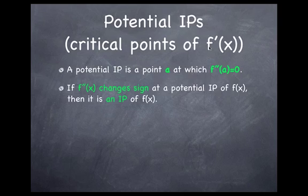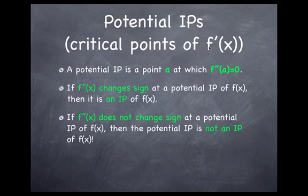So we can figure this out by simply plugging in values to f'' on either side of the 0 and see if the sign has changed. If the sign doesn't change, then the potential inflection point is not an actual inflection point. And again, we can test this to see if the sign changes by plugging in values on either side of the 0.